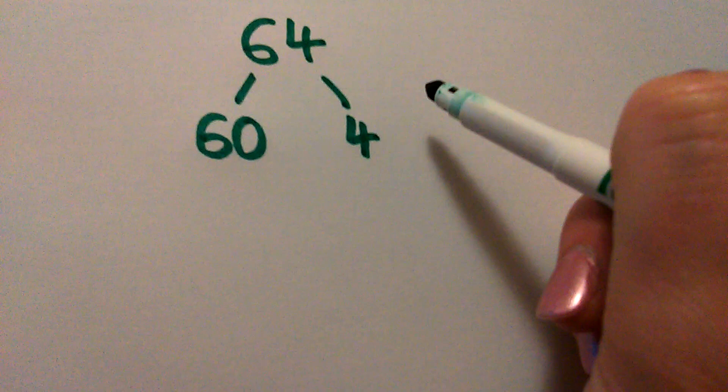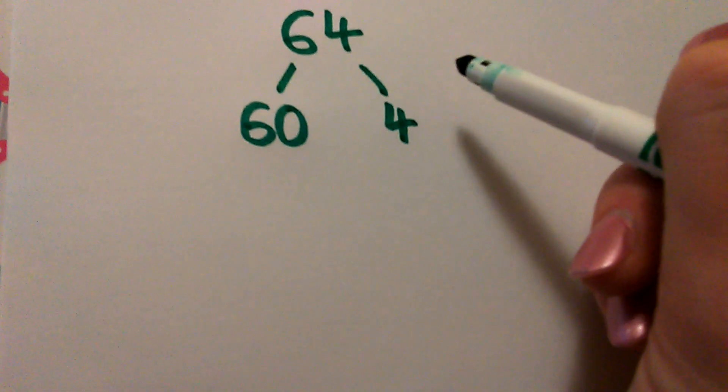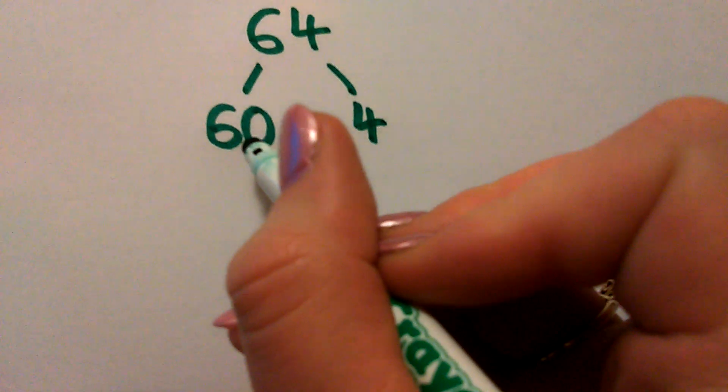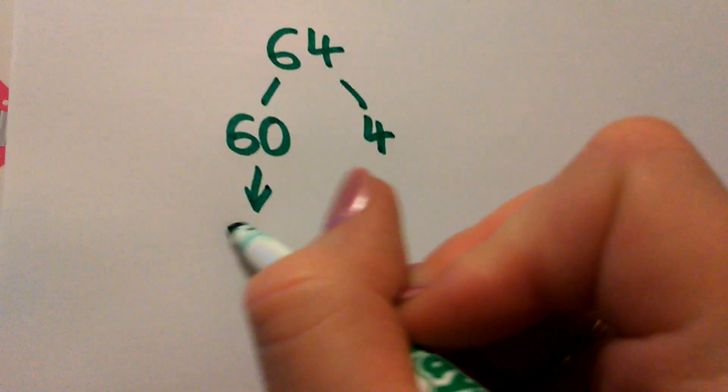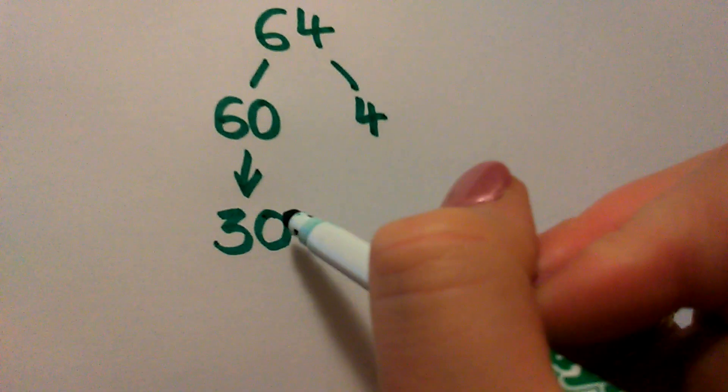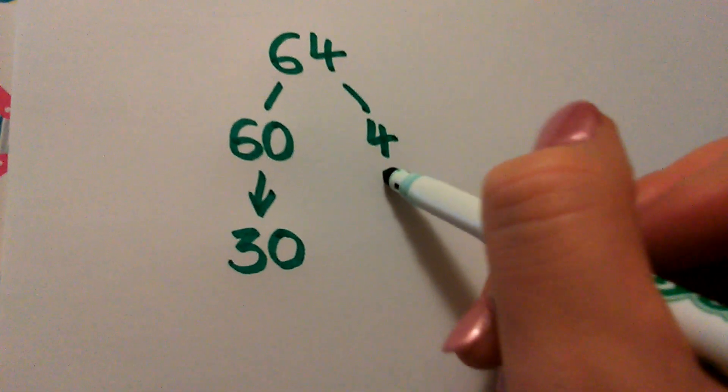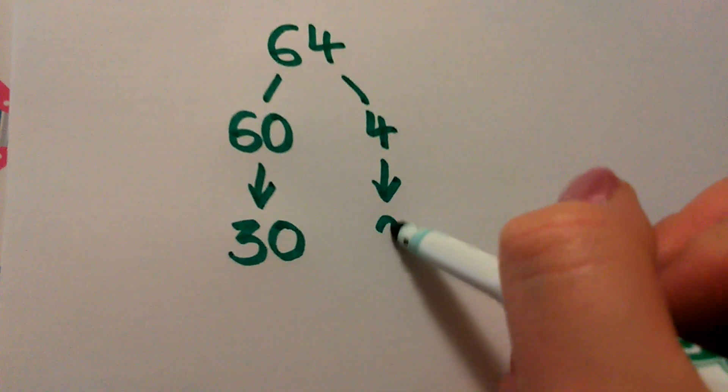And what I'm going to do then is I'm going to halve each of these separate parts. So 60 halved is 30. And 4 halved is 2.